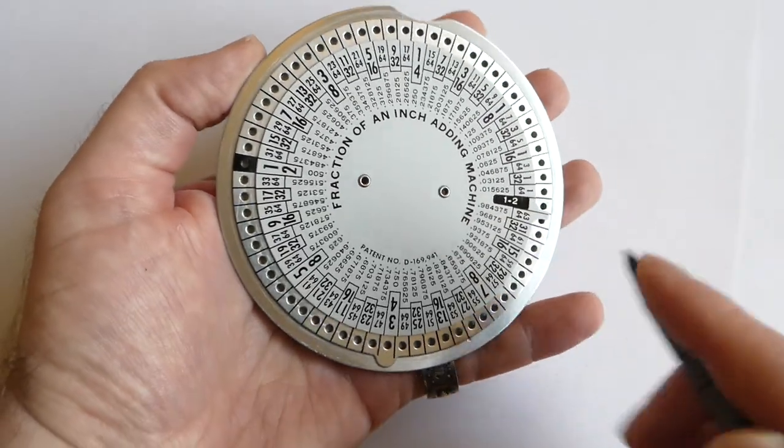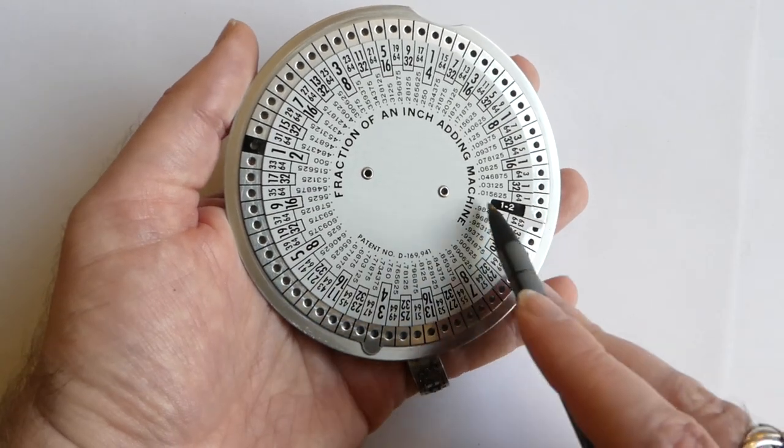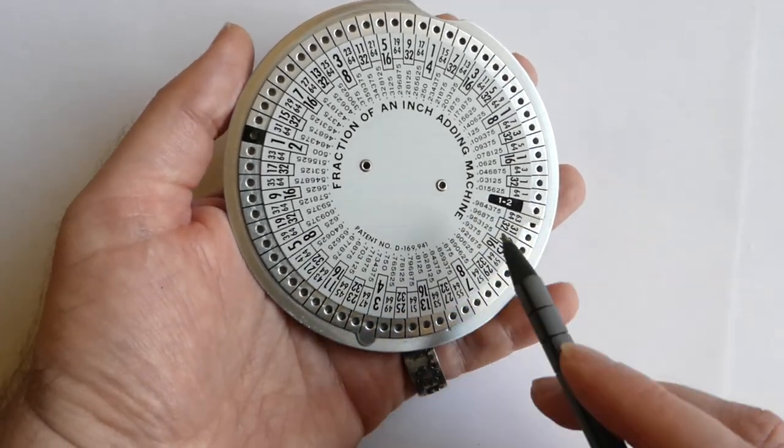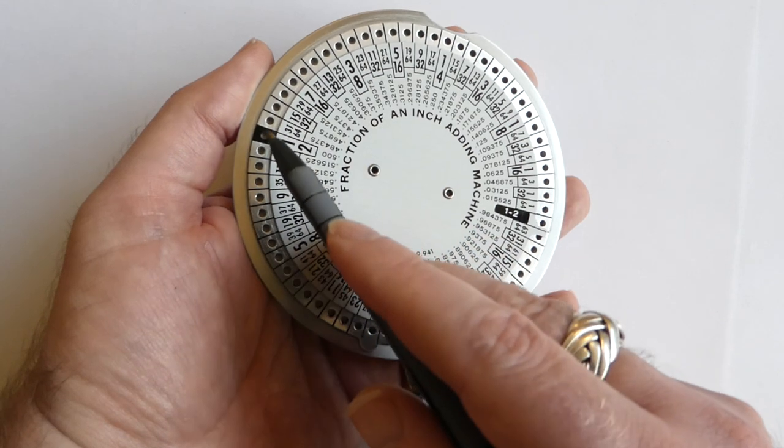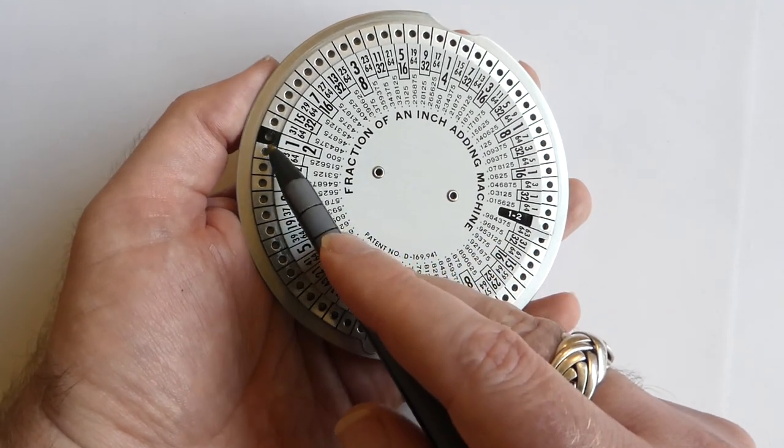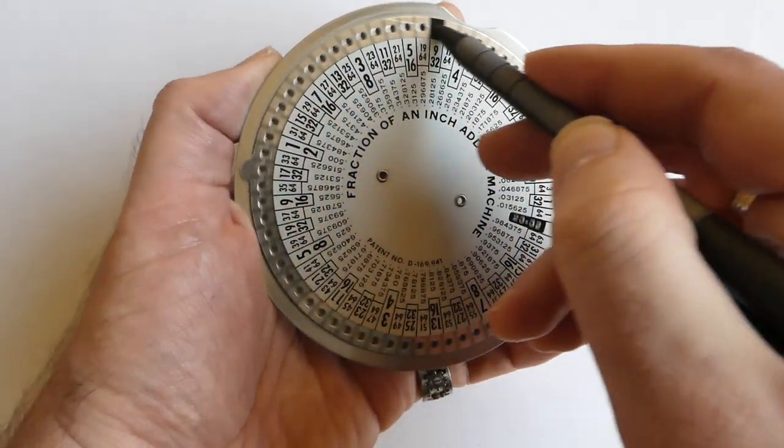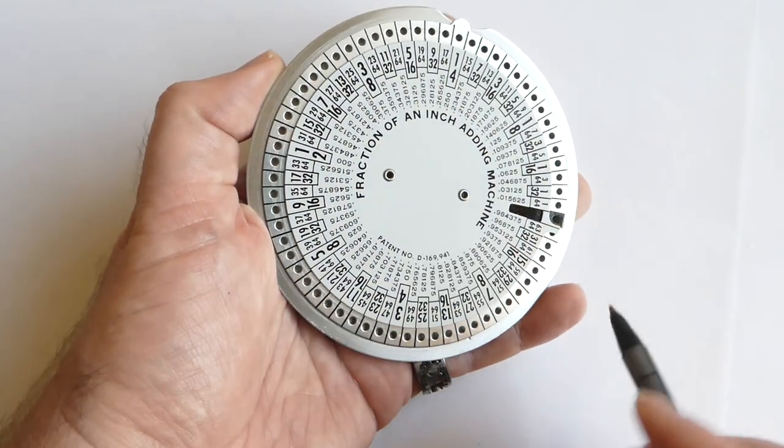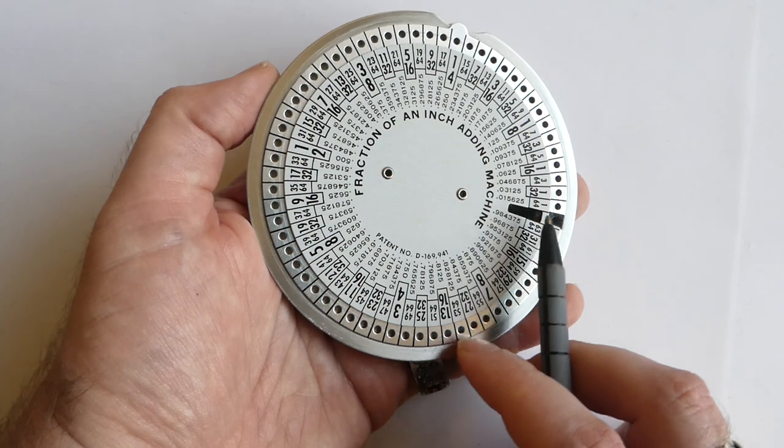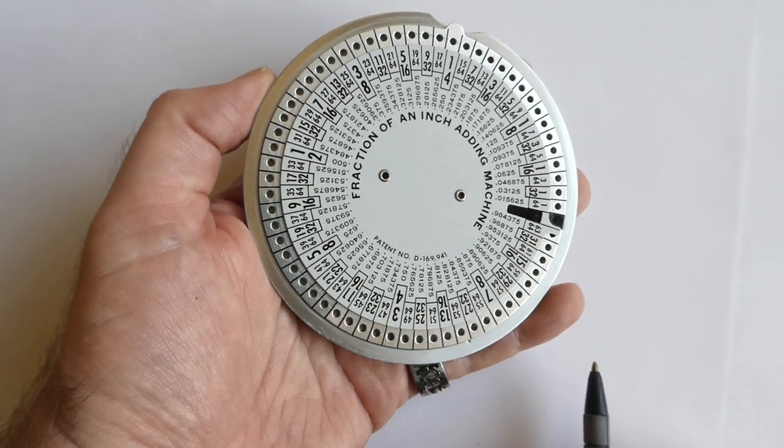To clear the register as it were, clear the window, you put your stylus in the black hole here, the hole that has a black rim around it, and move that to the start. And now it's back to empty again, to zero.